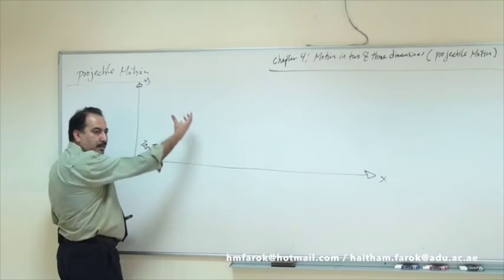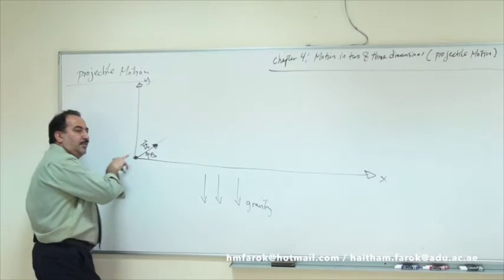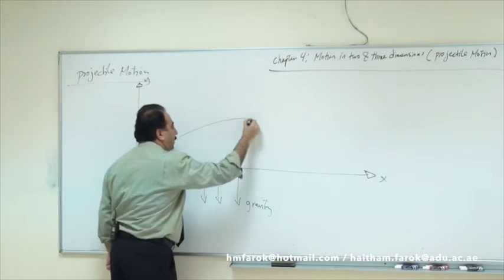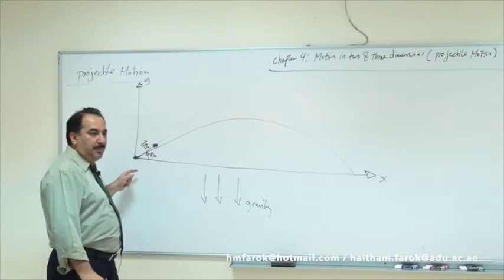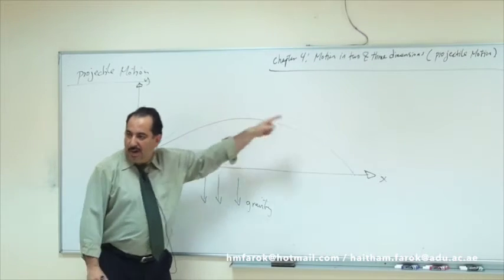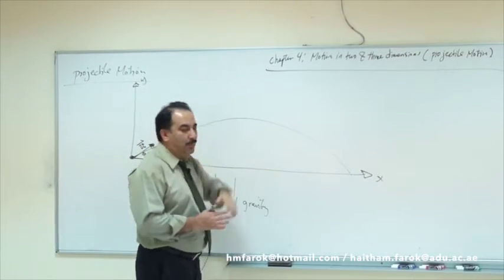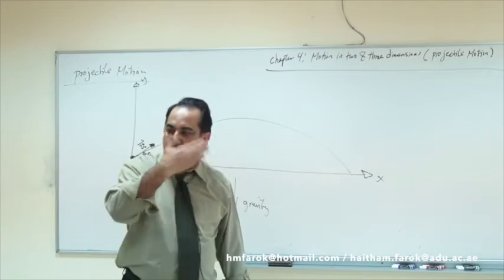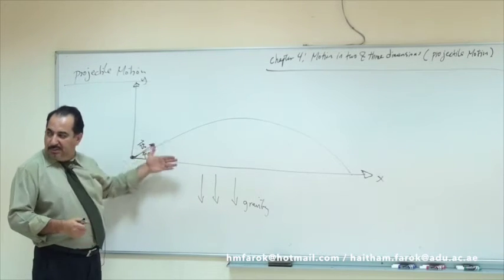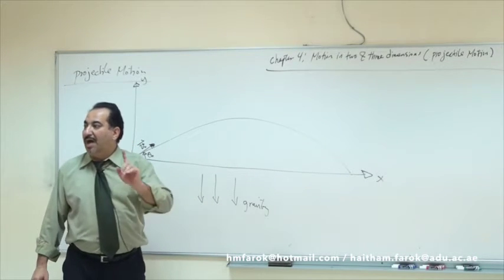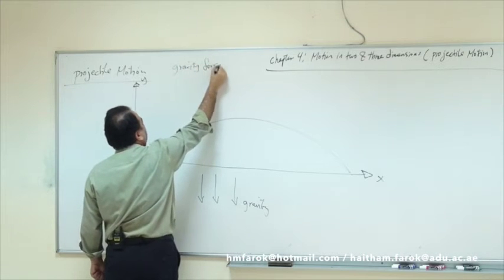But if you throw an object while you are on Earth or any planet, what happens? Because of gravity — and gravity is which way? Downward. So here you have gravity acting downward. Instead of going straight, it will go in an arc — up and back. The force of gravity will affect the shape of the motion; it will not go straight. This is what we call projectile motion. So what is projectile motion? It's motion in a two-dimensional plane under the influence of gravity only — no other forces.